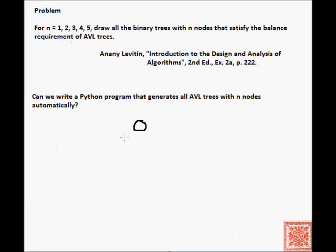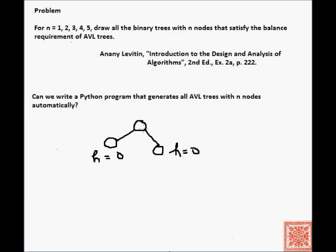This is the root of the tree. Let's draw this tree: this is the root, this is the left child, this is the right child — the left subtree with one node and the right subtree with one node. The height of the left child is zero, because the height of a tree with just one node is zero by definition. And the height of the right child is also zero.